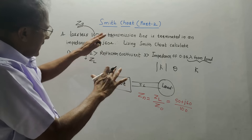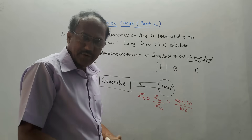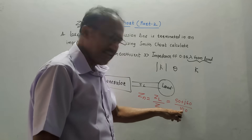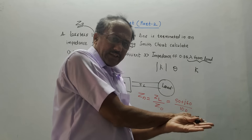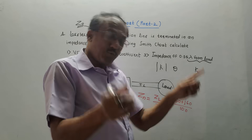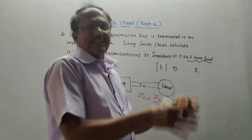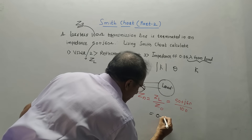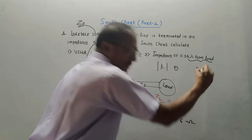Let us start solving the numerical. The first step is to calculate the normalized impedance, denoted Zn, using the formula Zn = ZL / Z0. We have ZL = 50 + j60 and Z0 = 100. Performing this calculation gives 0.5 + j0.6. This is the value of normalized impedance Zn, and its unit is ohms.